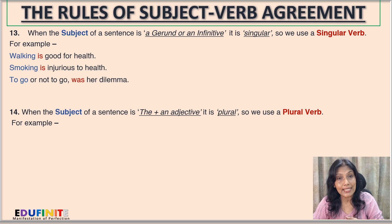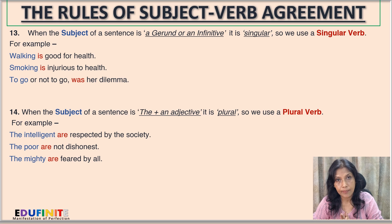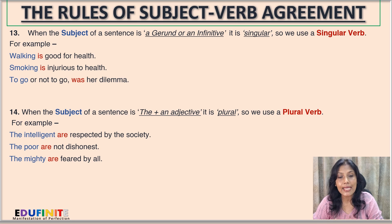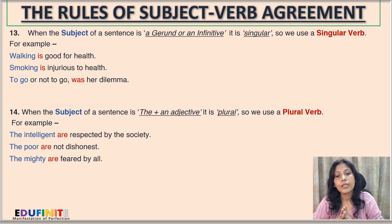Rule number thirteen: when the subject of a sentence is a gerund or an infinitive, it is singular, so we use a singular verb. For example: 'Walking is good for health' — 'walking' is the gerund, considered singular, so we use 'is', not 'are'. 'Smoking is injurious to health' — 'smoking' is a gerund, so we use the singular verb 'is'. 'Smoking are injurious to health' is absolutely wrong.